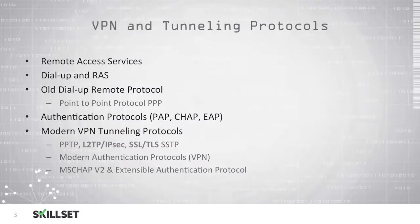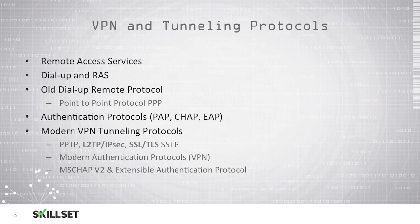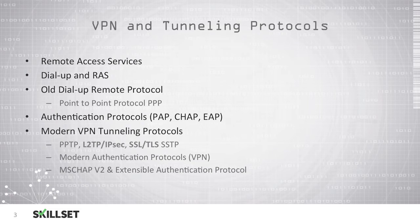There are several different VPN and tunneling protocols that can be used for remote access: Remote Access Services (RAS), dial-up with RAS, and Point-to-Point Protocol (PPP), which is an older dial-up remote protocol. Several authentication protocols ensure individuals are who they claim to be, including PAP, CHAP, and EAP. Newer VPN tunneling protocols include PPTP (Point-to-Point Tunneling Protocol), L2TP (Layer Two Tunneling Protocol) with IPSec, and SSL/TLS or SSTP (Secure Socket Tunneling Protocol).